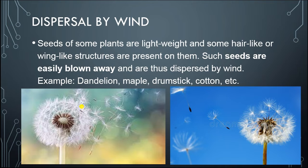The seeds that are dispersed by wind are very lightweight. Because they are lightweight, the wind is able to carry them and the seeds will be easily blown away anywhere — and in this way they are dispersed by wind. Some examples are dandelion, maple, drumstick, cotton, etc. Here are pictures of how the seeds are scattered by wind.